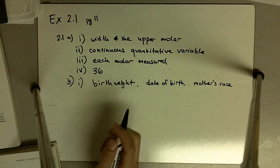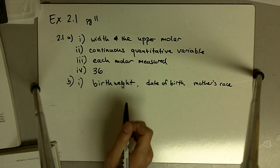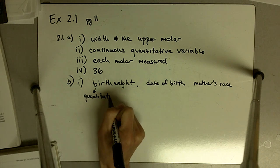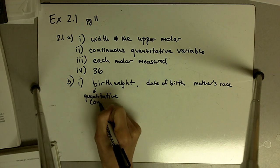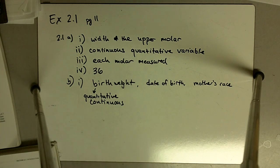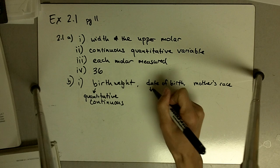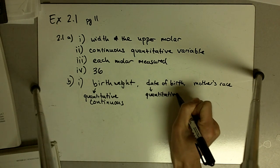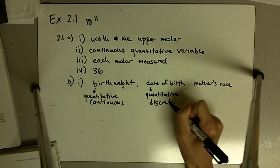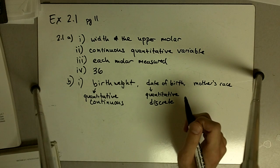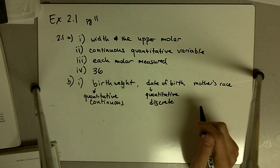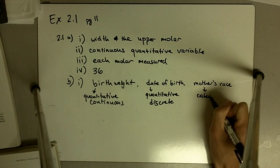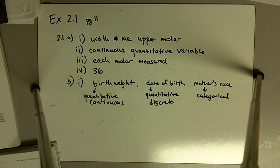For each of these variables, we're going to determine what kind of variable they are. The birth weight is quantitative and it's continuous. Date of birth is quantitative but it's discrete in this case. You can only take on certain birth dates, whether it's November 3rd or November 5th, you're only going to take on one of those. The mother's race in this case is categorical.